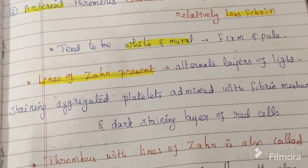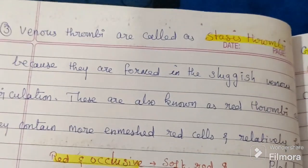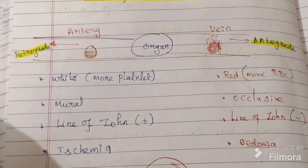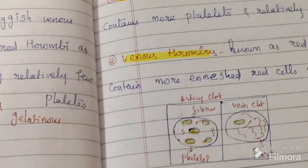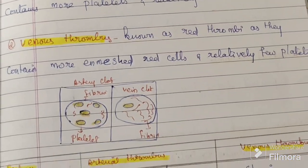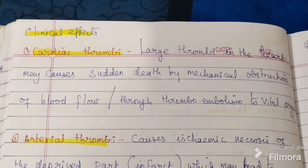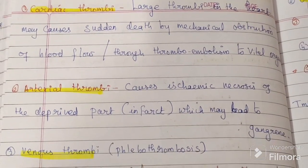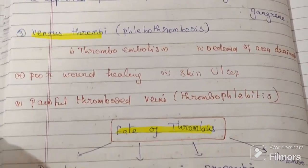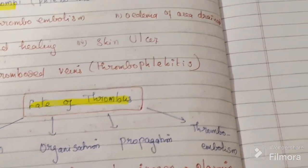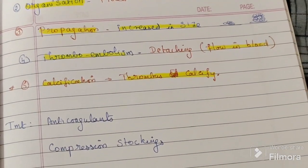Types of thrombus: based on site of origin there are three types, but the main ones are arterial and venous thrombus. This diagram explains both arterial and venous thrombus grossly. The differences between arterial and venous thrombus were discussed, along with clinical effects: cardiac thrombus causes sudden death, arterial thrombus causes infarction. The fate — resolution, organization, propagation, and thromboembolism — and treatment with anticoagulants and compression stockings were also covered. Thanks for watching.